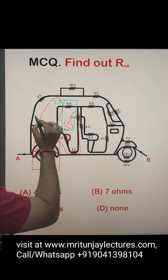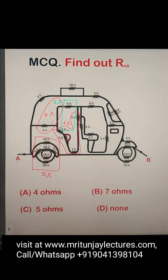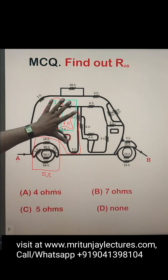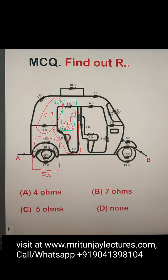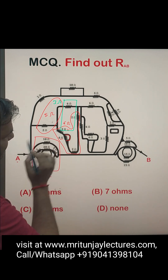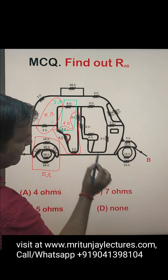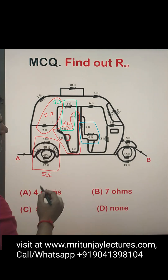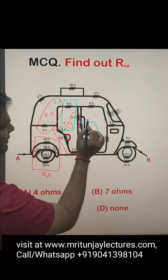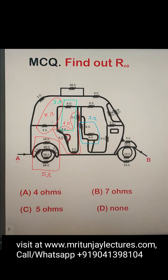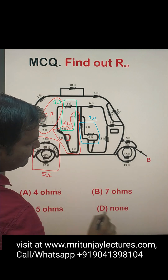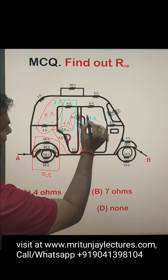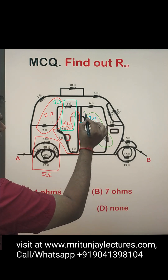That combination of 3Ω and 2Ω in series gives 5Ω. Also, 6Ω and 6Ω in parallel gives 3Ω. Then 3Ω and 3Ω in series gives 6Ω.